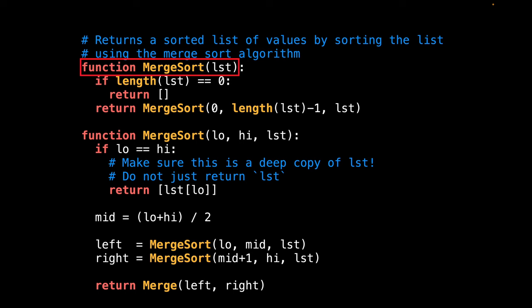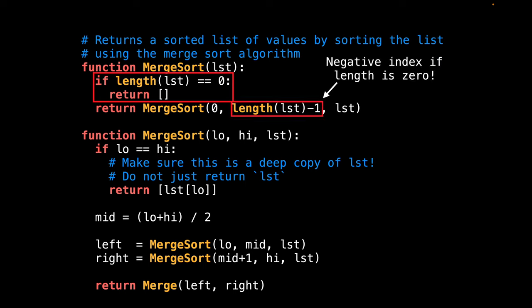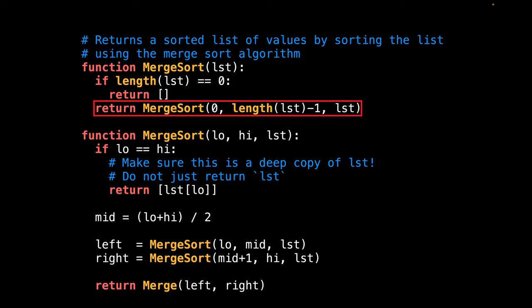On the first line, we declare the merge sort function, which takes the list we want to sort as input. Upon entering the function, we verify that the length of the list is zero. And if it is, then return an empty list. The primary reason for checking if the length of the list is greater than zero before calling the merge sort algorithm is to prevent the occurrence of a negative index when the length of the list is zero. Following that, we can invoke the internal merge sort function by passing the initial lower and upper bounds. Since the indices are inclusive, we provide zero and the length of the list minus one as initial values.